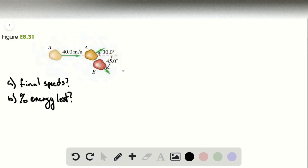Problem 8.31. We have two asteroids colliding. They have the same mass, which is very convenient. The initial speed of this is 40 meters per second, and then they go off in two directions whose angles from the initial direction of motion are given.